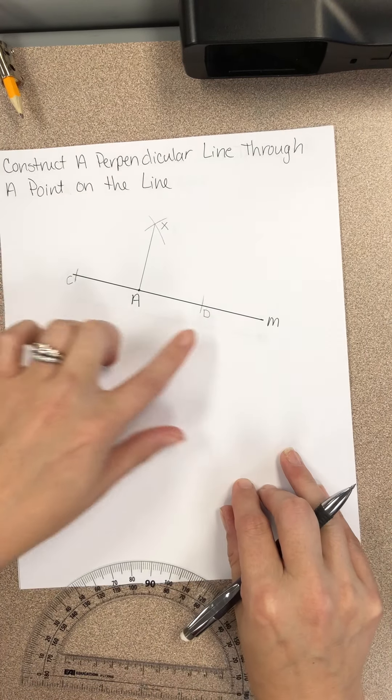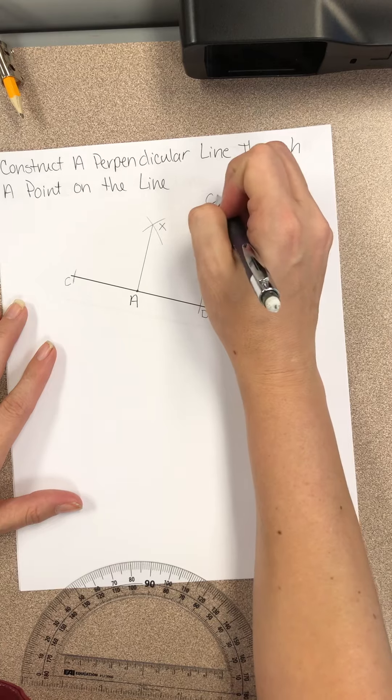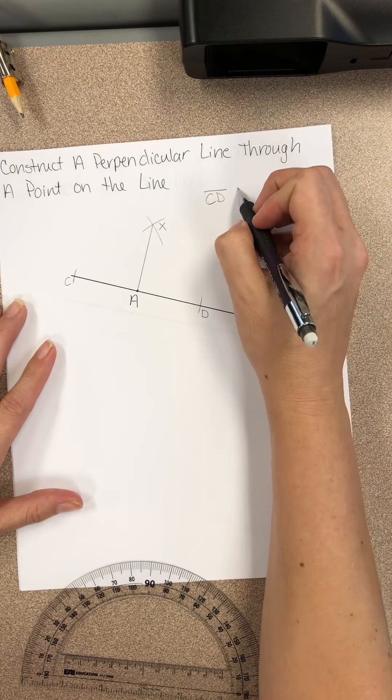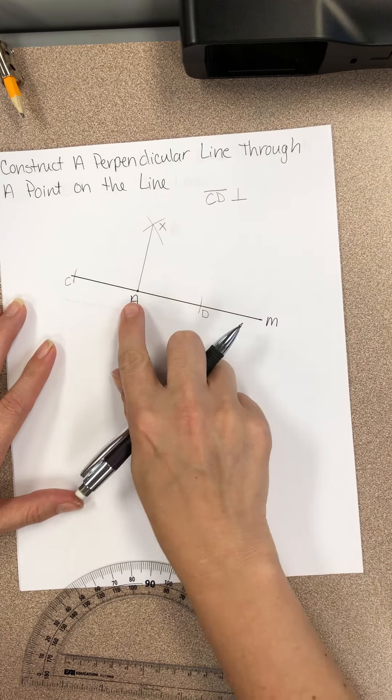So now the line CD is perpendicular, so we write that symbol to AX.